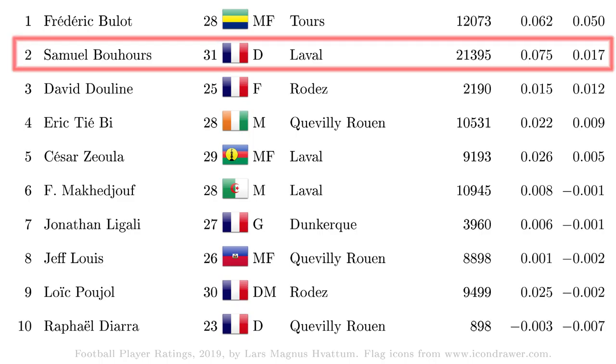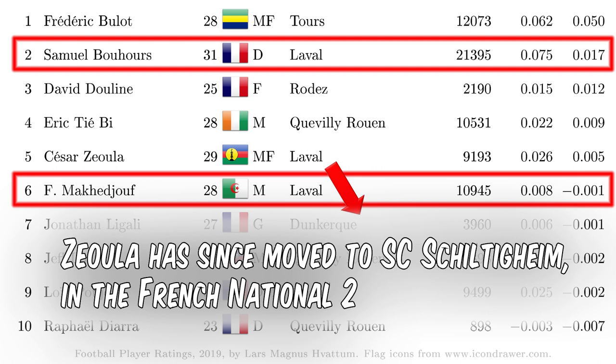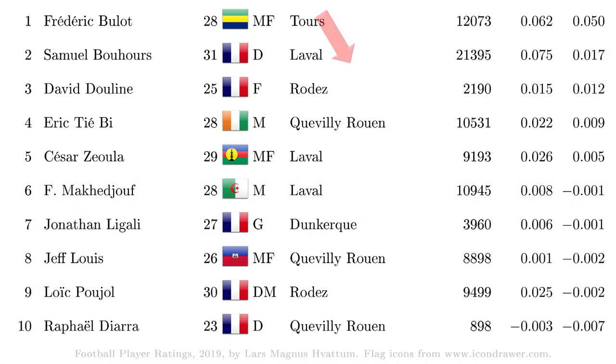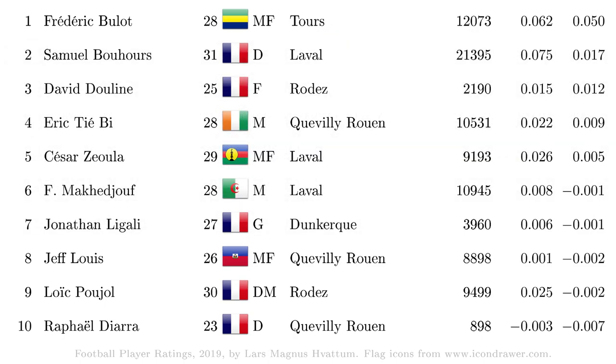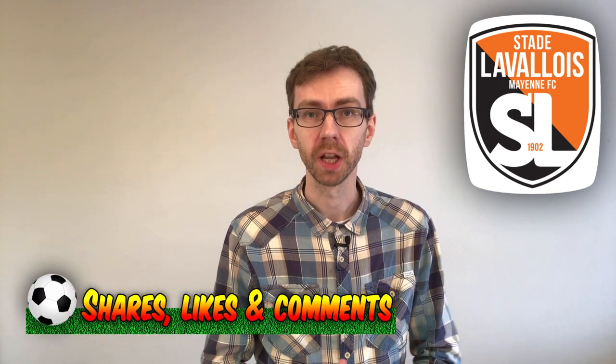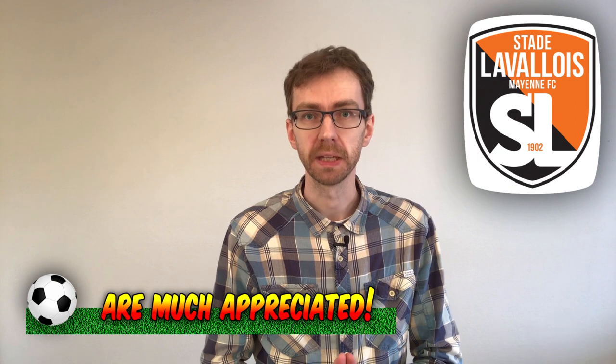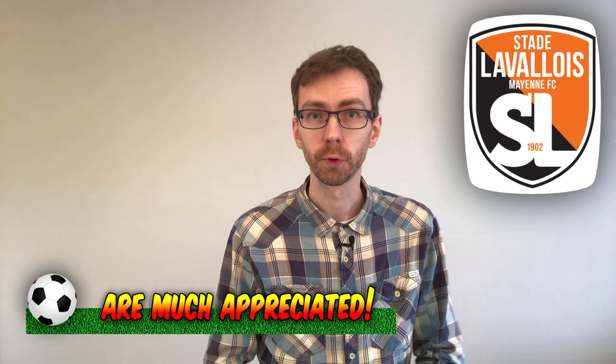Now let's turn to National 1 and the players of Laval. First, the top 10 players of National 1. Now let's look at Stade Lavalois. The following list contains all the players that have played for Stade Lavalois within the last year, and have not appeared for any other team afterwards. This results in a total of 30 players, out of which only one is a goalkeeper.